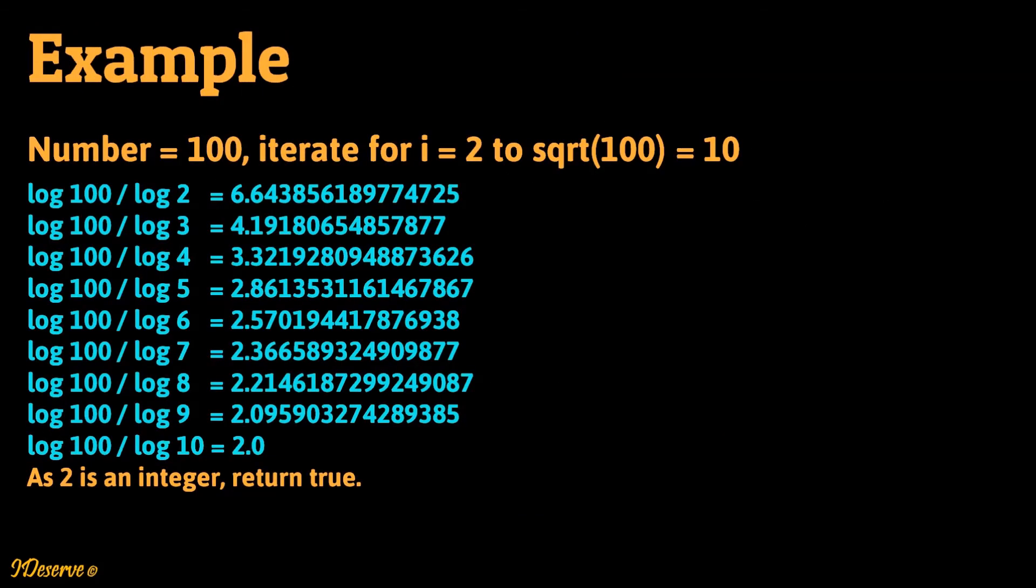Let us understand and visualize the algorithm through some examples. Consider the given number as 100. We have to iterate for i equal to 2 to square root of number which is square root of 100 and if log 100 by log i comes out to be an integer we have to return true.